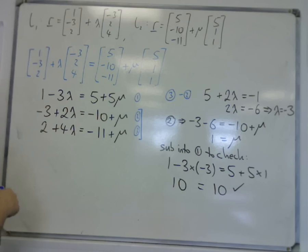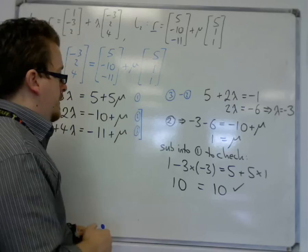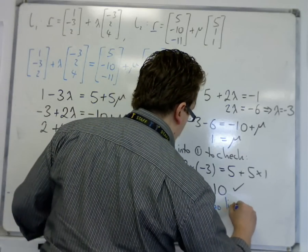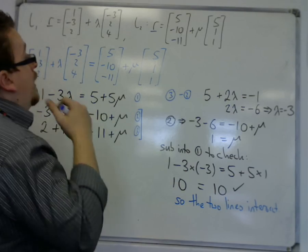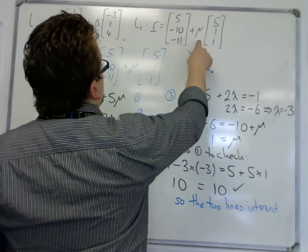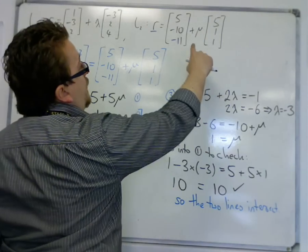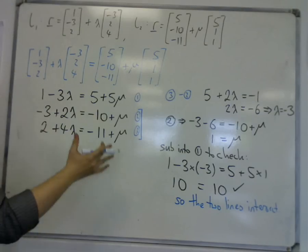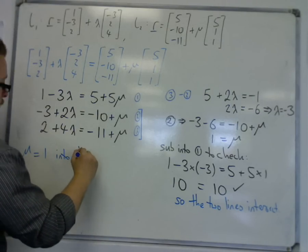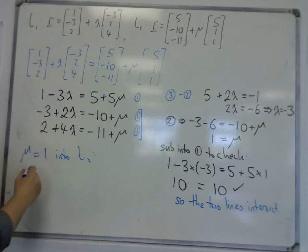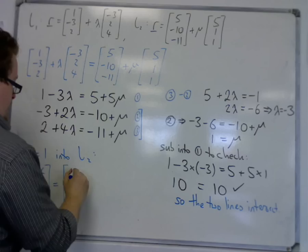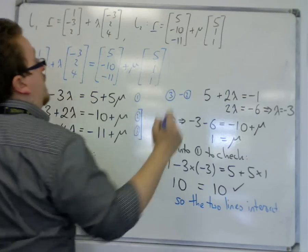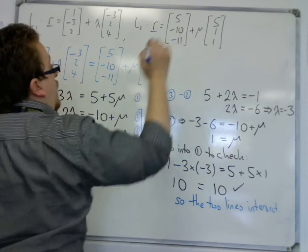So we have the two lines intersecting, and it's just now, can we work out where they intersect? So the two lines intersect. So now just choose either your lambda or mu and substitute lambda into L1 or mu into L2. Seeing as 1 is probably the easier to work with than minus 3, I'm going to sub the mu is 1 into L2. And I get my r, as we know, is x, y, z. 5 plus 1 lot of 5 is 10, minus 10 plus 1 lot of 1 is minus 9, and minus 11 plus 1 lot of 1 is minus 10.